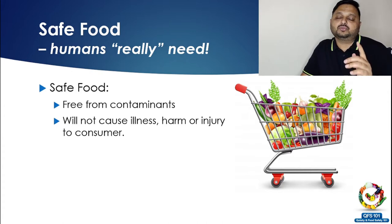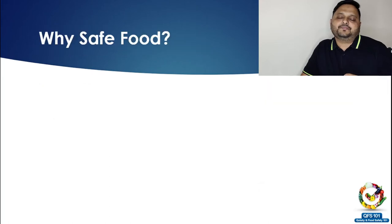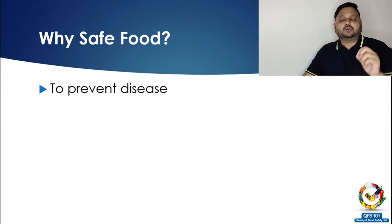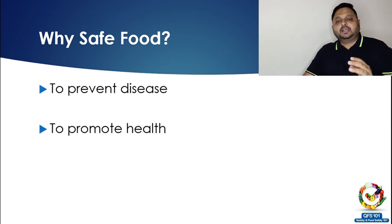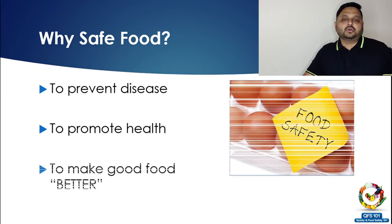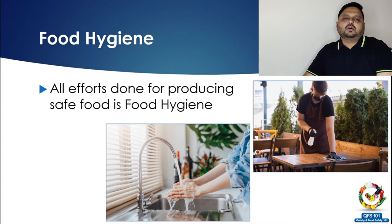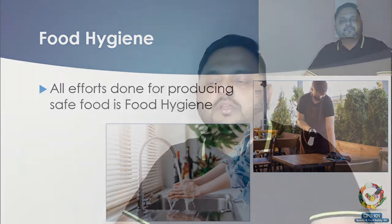So what is safe food? It is free from contaminants and will not cause illness, injury, or harm to the consumer. Why do we need safe food? There can be a million reasons, but simplified to three: number one, to protect from disease or prevent diseases from spreading through food; number two, to promote health and make our food even better. Safe food is like medicine — if people have safe food, they will have healthy lives and reduce their visits to the doctor. All the practices and efforts done to produce safe food are called food hygiene or food safety.